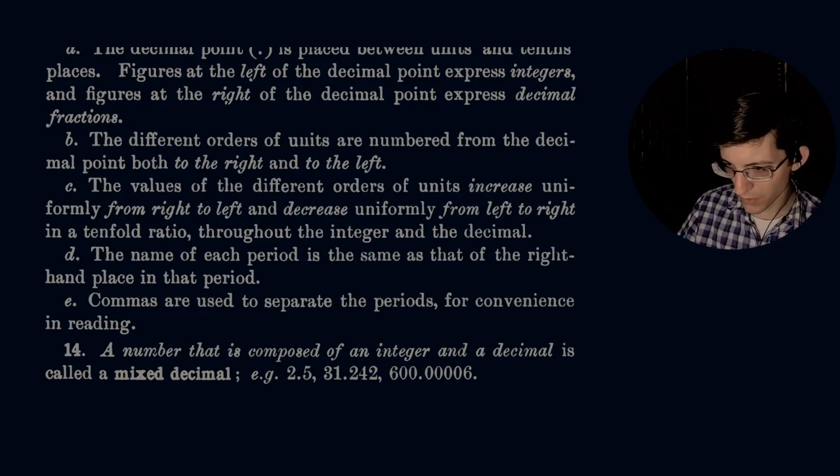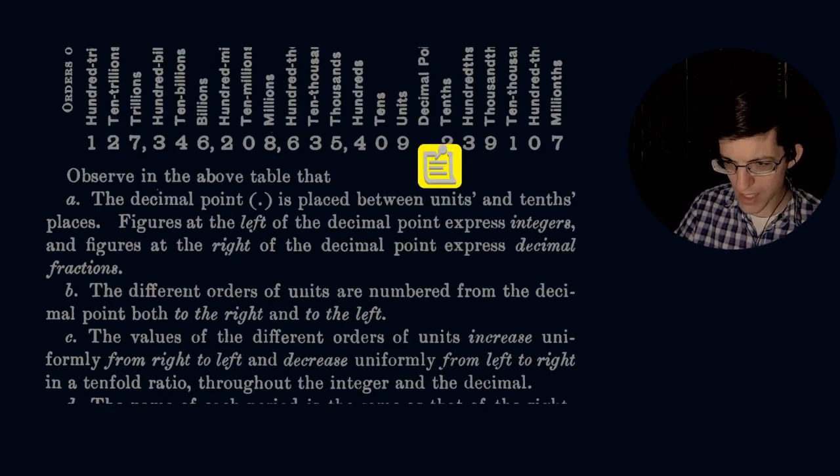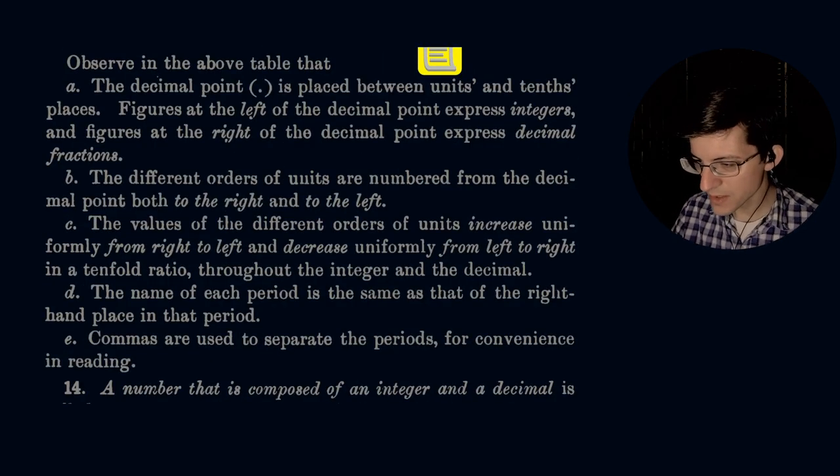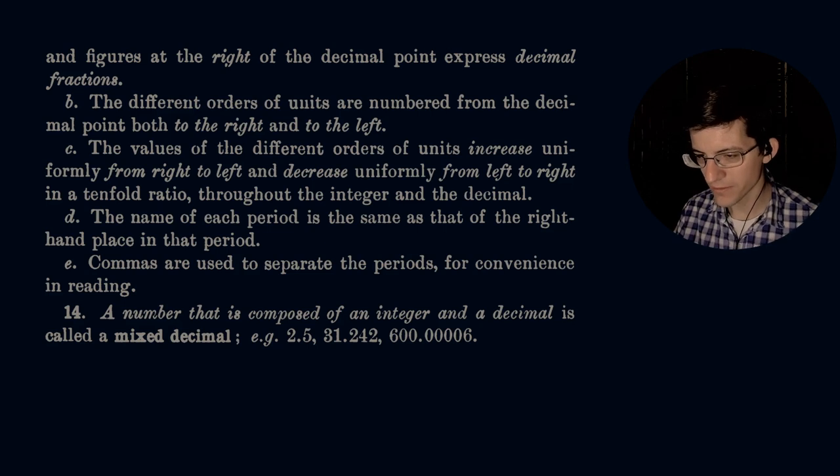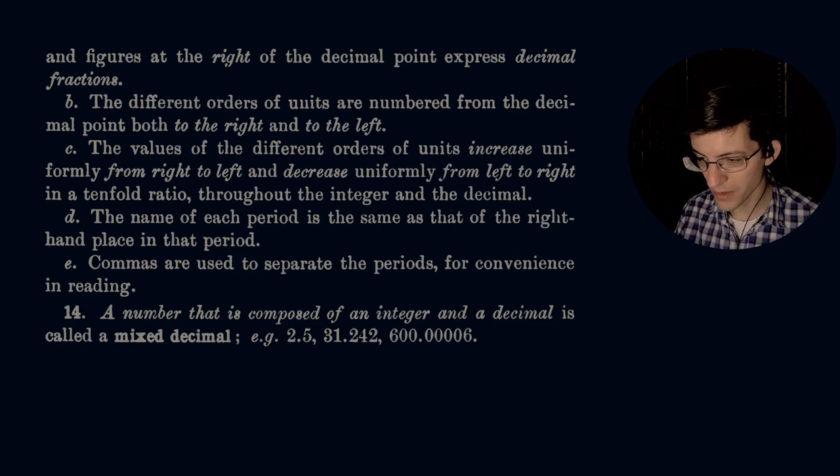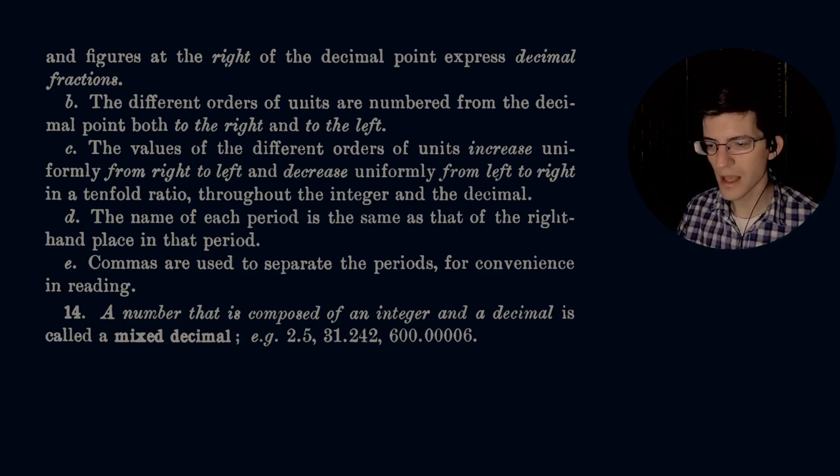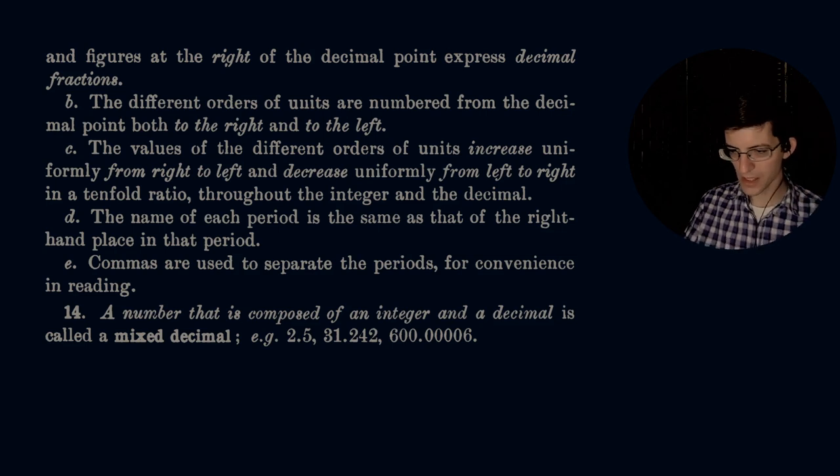The values of the different orders of units increase uniformly from right to left and decrease uniformly from left to right in a tenfold ratio throughout the integers and the decimal. The name of each period is the same as that of the right-hand place in that period. Commas are used to separate the periods for convenience in reading.